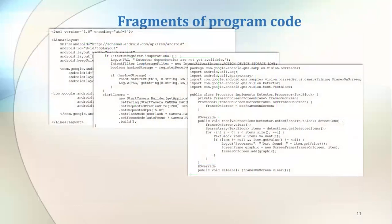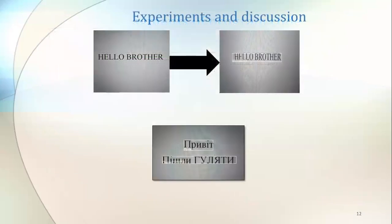Now let's have a look at some fragments of the program code presented on this slide. The software is developed in Android Studio using the Java programming language. The improved algorithm works by overlaying images, thus eliminating frame loss. That is, the algorithm quickly recognizes text on the phone screen, resulting in the recognition of Ukrainian text when changing frames in video mode.